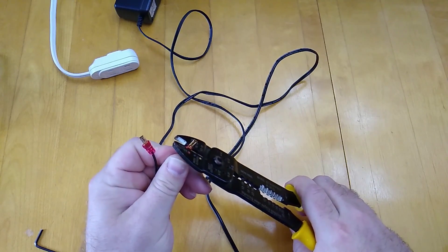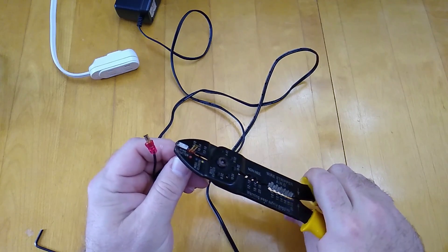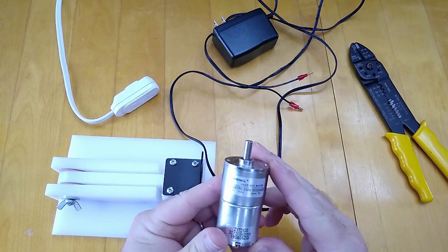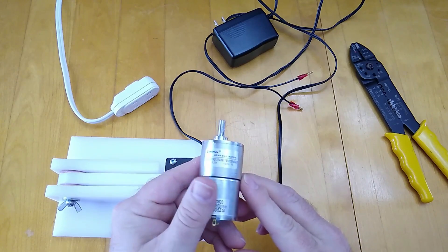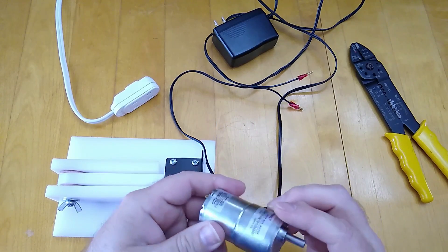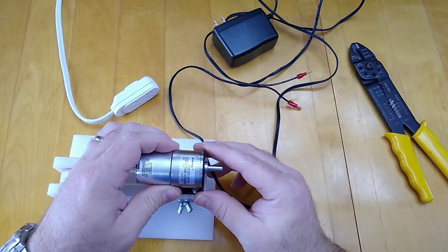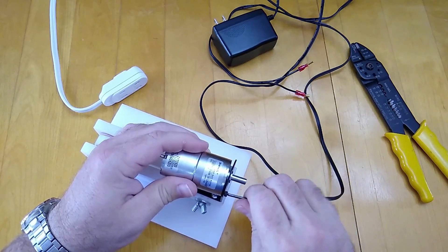Once you get the terminals crimped onto the ends of the wire, it holds pretty securely. Because this is a direct wire setup that I'm using for this particular 10 RPM dryer type motor, it really doesn't matter which connection you put on positive and negative on the motor.